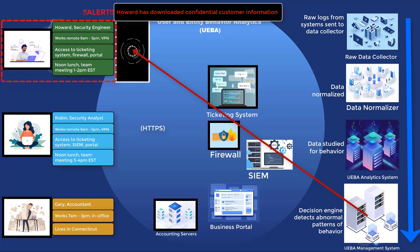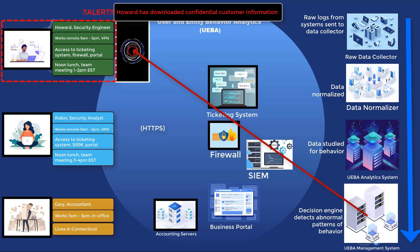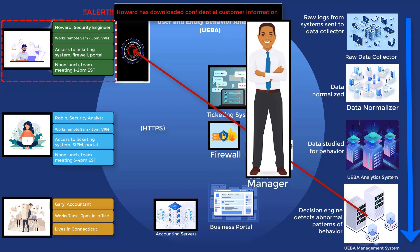The UEBA administrator sees an alert for Howard showing that he has been trying to download copies of a customer record containing their primary contact names, phone numbers, email addresses, type of customer, type of firewall they use, and a ticket history of all requests to add or remove IP addresses from the firewall rule base. The administrator notes that doesn't look like what Howard has done before or should be doing — although he is allowed to, he doesn't usually do that. The administrator contacts Howard's manager to report that the UEBA platform has seen Howard download multiple copies of customer data to his local machine.